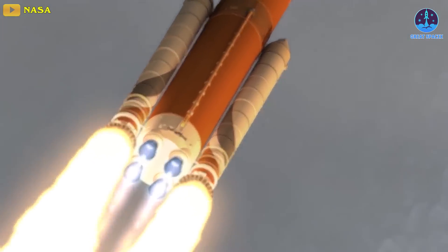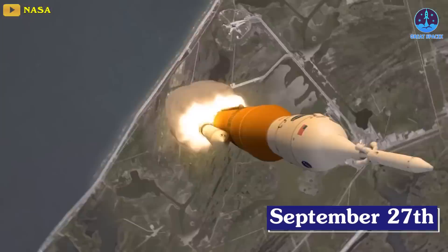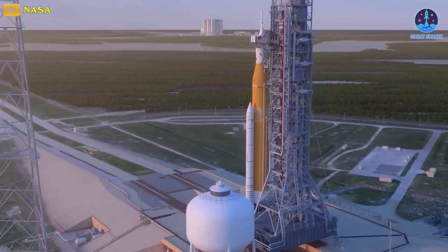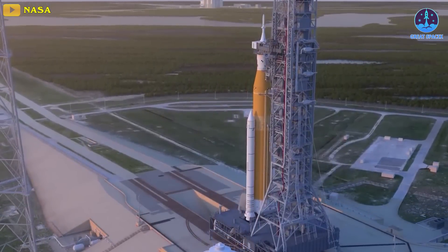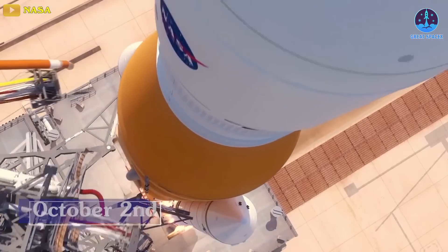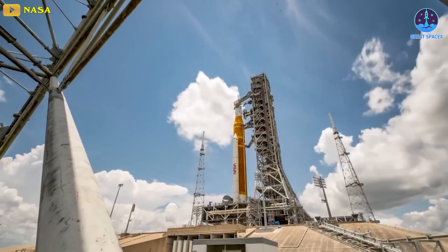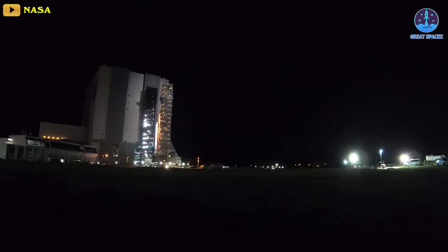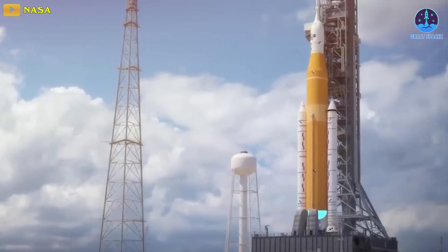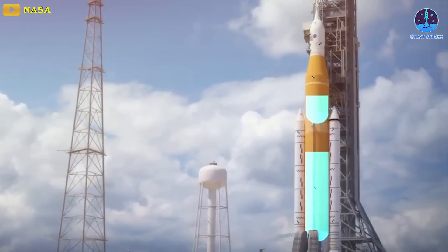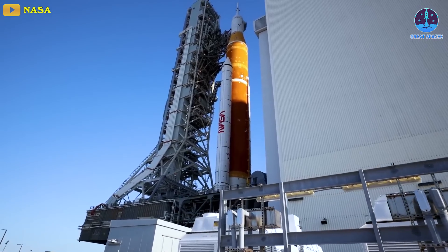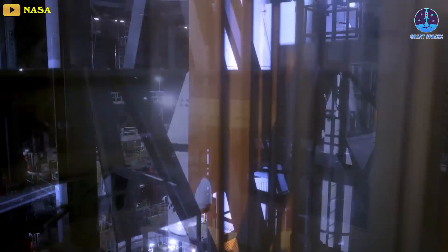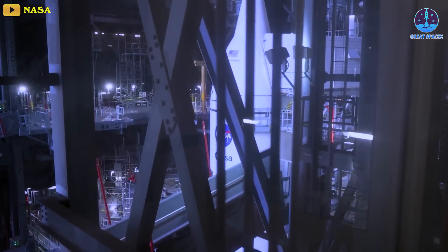If successful, we have a launch attempt on September 27th to look forward to. But in case Artemis 1 cannot hit the September 27th launch opportunity, a backup window opens on October 2nd. The Artemis 1 stack rolled out to Pad 39B on August 16th from KSC's Vehicle Assembly Building. If Wednesday's fueling test does not go well, SLS and Orion may have to go back to the VAB for more extensive work. Artemis 1 might also have to roll back to the VAB for another reason.